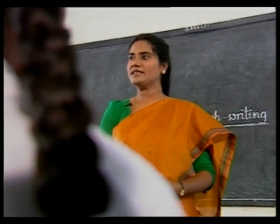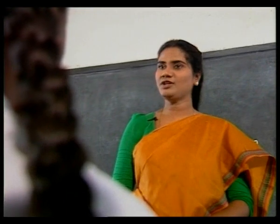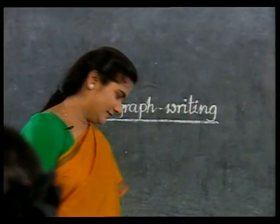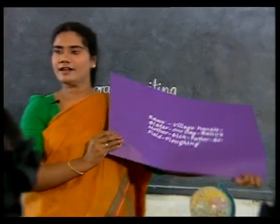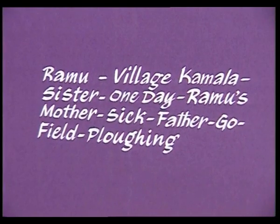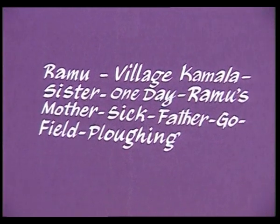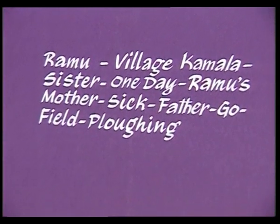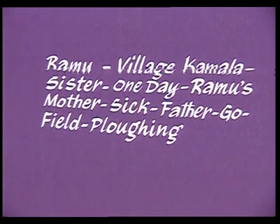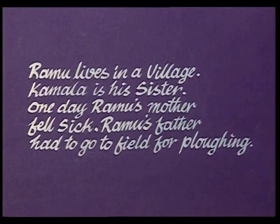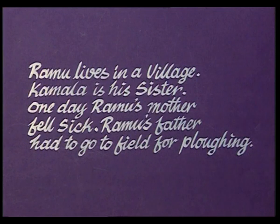Now that you are able to make sentences, I would like to give you certain hints that can be used to make a few sentences. Look at these hints: Ramu, village, Kamala, sister, one day, Ramu's mother, sick, father, go, field, plowing. Using these hints: Ramu lives in a village. Kamala is his sister. One day Ramu's mother fell sick. Ramu's father had to go to the field for plowing.